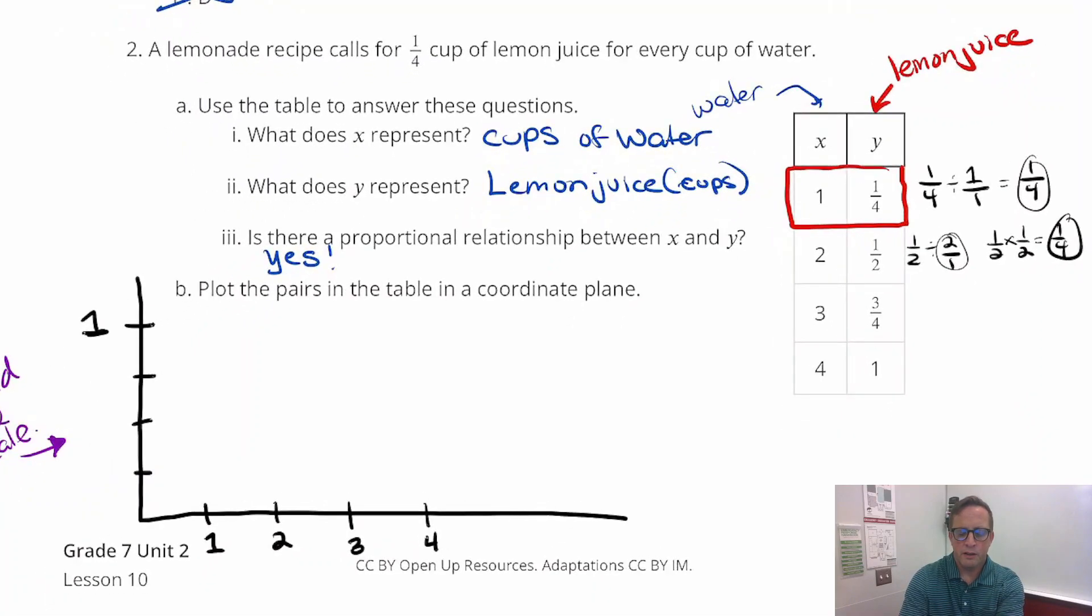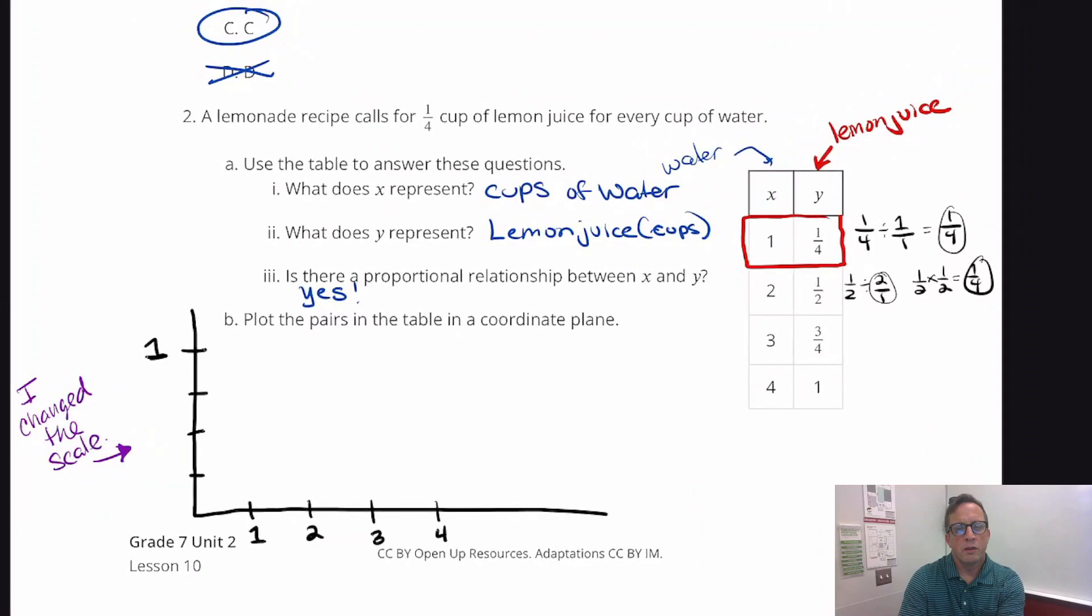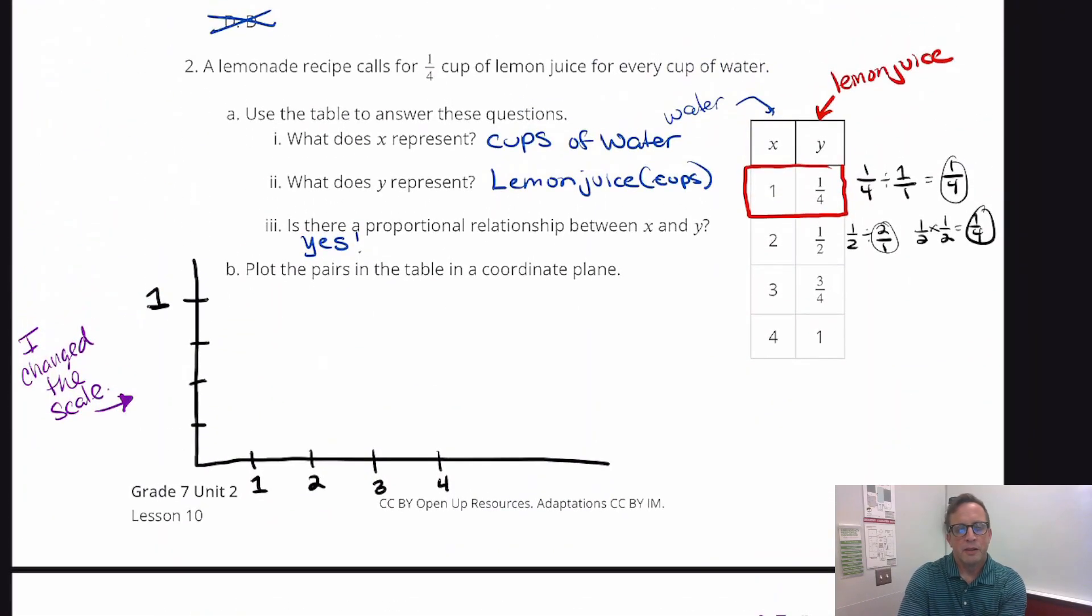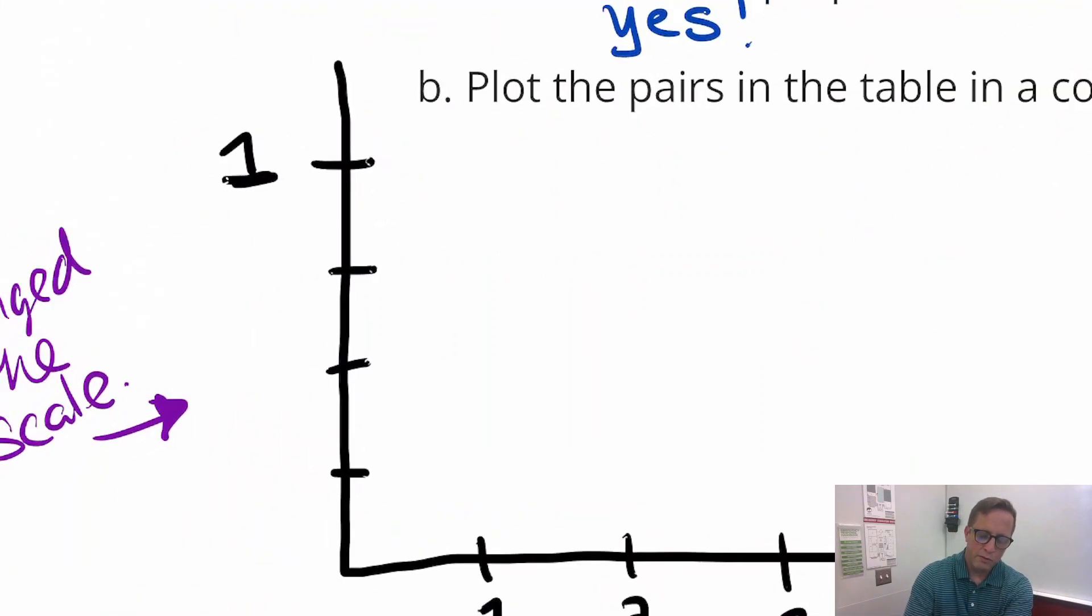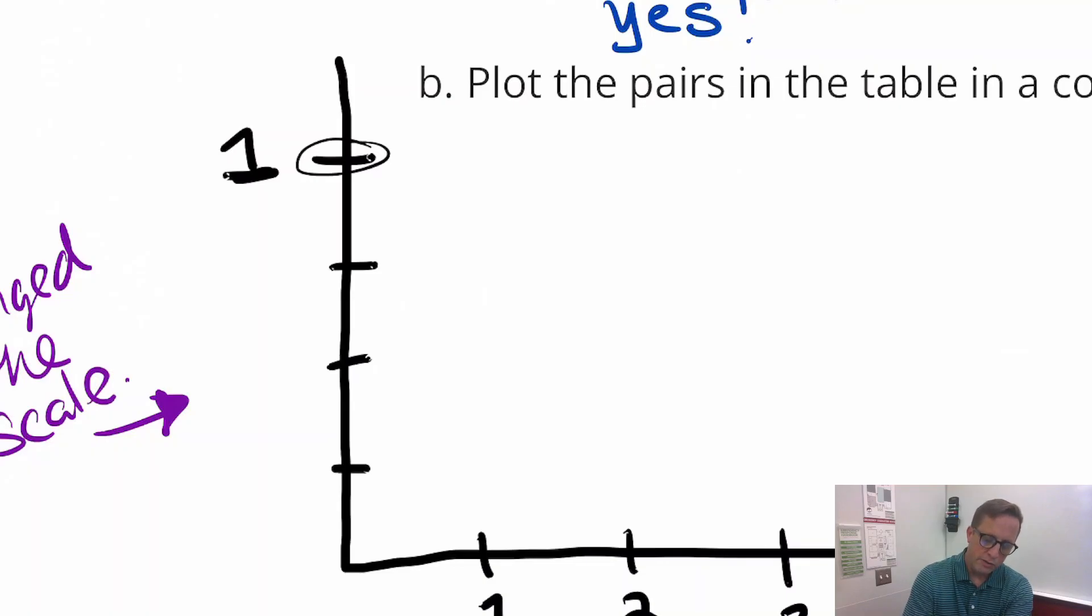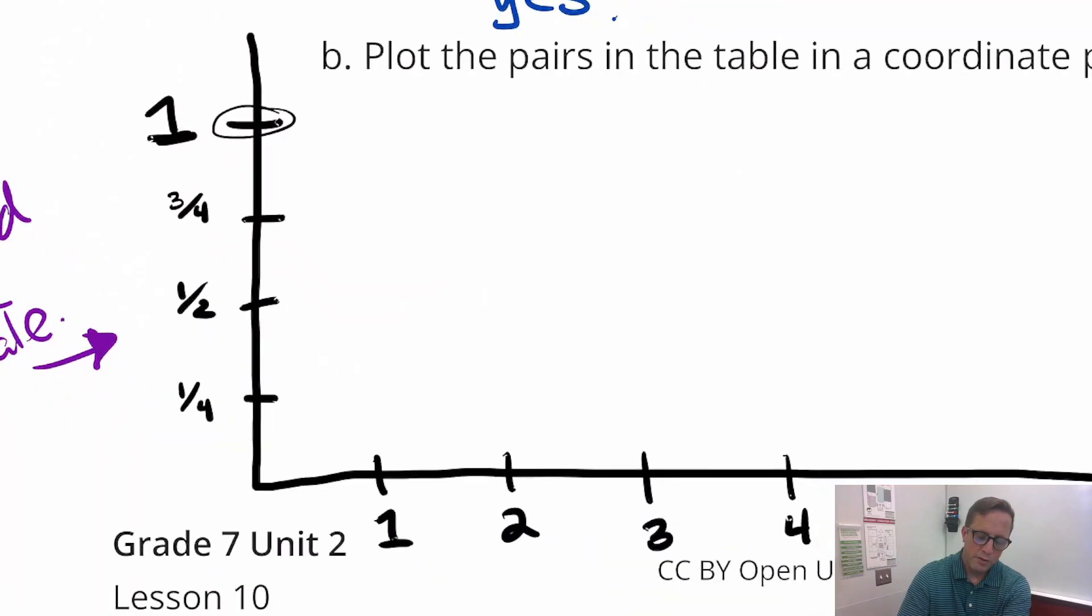So the answer to the third part of this question is yes. And then plot the pairs in the table in a coordinate plane. So you're not given a coordinate plane, so I just drew a hacky job there of a coordinate plane. And one thing that I did, you don't feel that every mark has got to equal one. What you might notice is that the output values are all fractions. So I made this right here one, so this means this must be one-half right there, and this must be three-fourths, and this must be one-fourth right there.